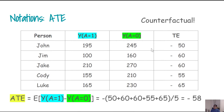Let us expand this example to five subjects: John, Jim, Jake, Cody, and Luke. We first give them the treatment and follow them up for three months and observe all of their cholesterol levels. Then we go back in time with all of these persons, make a different decision, do not give them rosuvastatin, and after three months observe their outcomes. Under this potential outcome framework, since we observe both outcomes, we can calculate the treatment effects for all persons and easily calculate the average treatment effect by averaging them all.